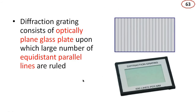A diffraction grating consists of an optically plane glass plate upon which a large number of equidistant parallel lines are ruled. In the lab, we have a diffraction grating which contains 6 lakh lines per meter, that is, 600 lines per millimeter.